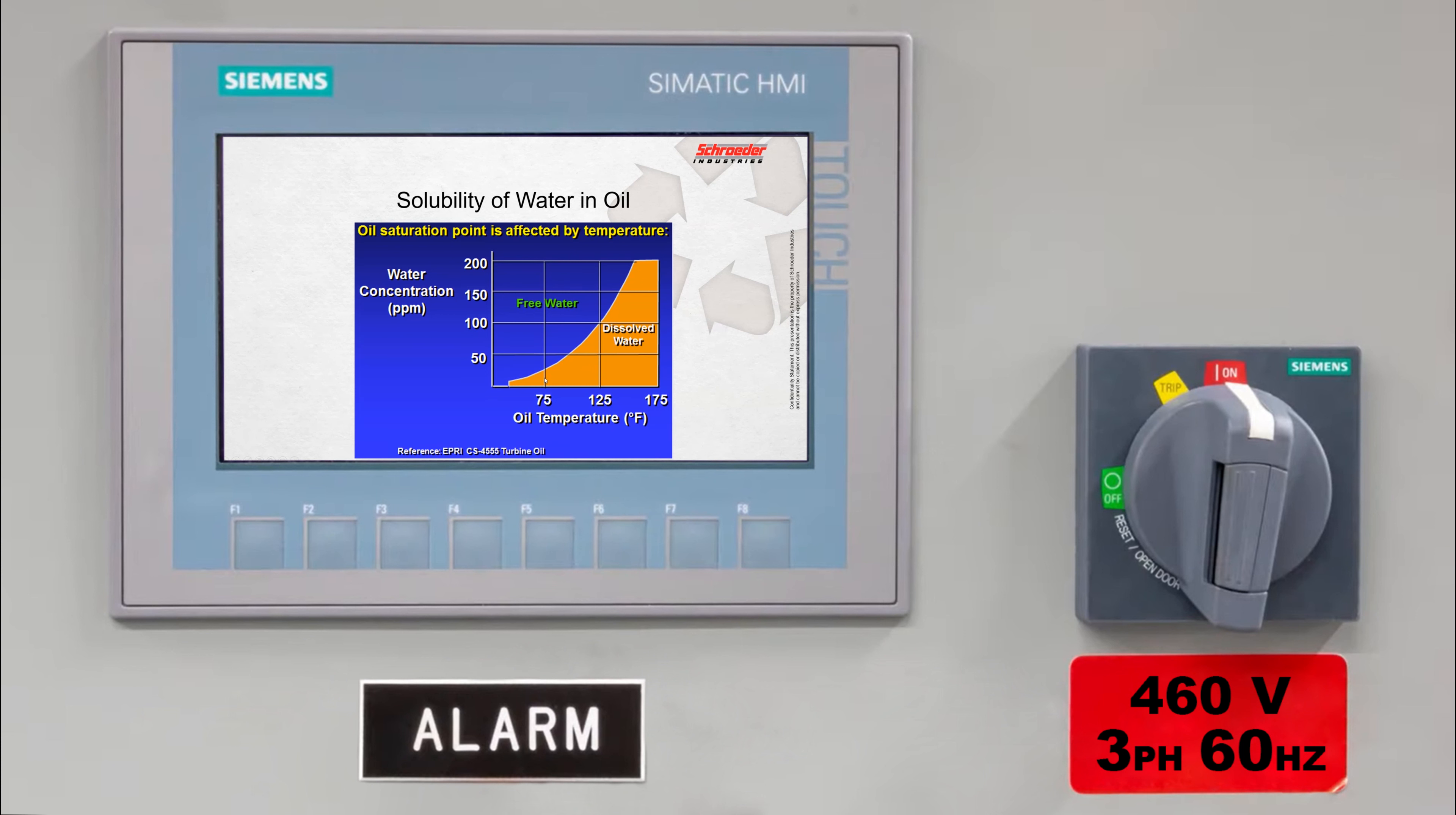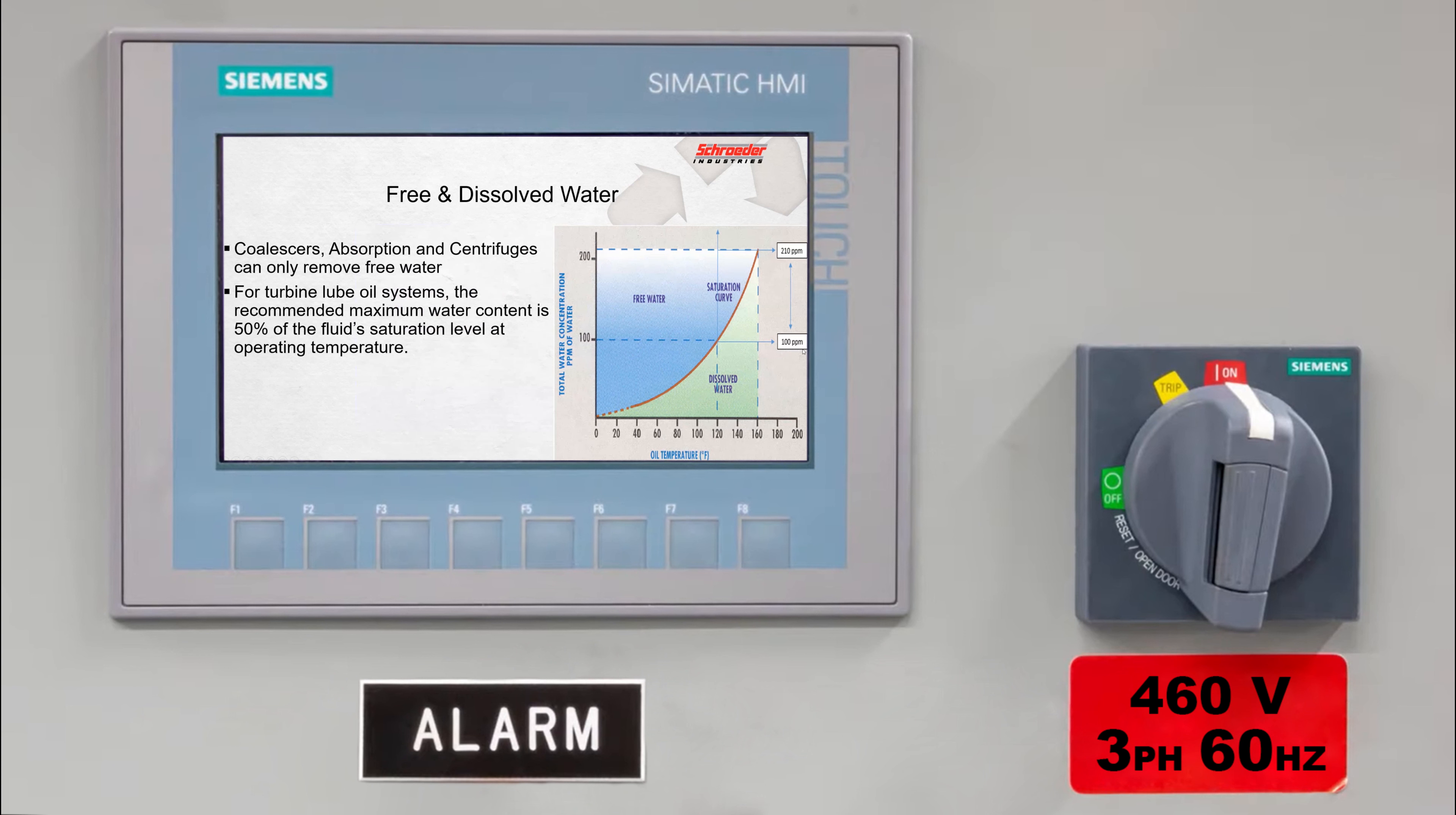In this customer's application with this type of fluid, looking at this curve, my recommendation to them is going to be we want to keep this fluid somewhere around below 50 PPM, roughly around 25 if not slightly below, so there's no free water present when the system's at rest.